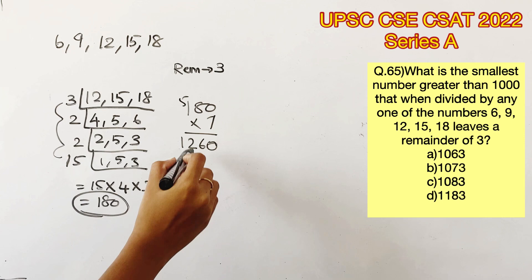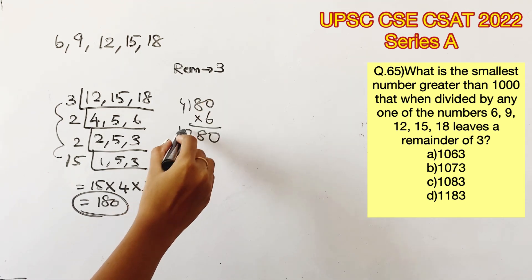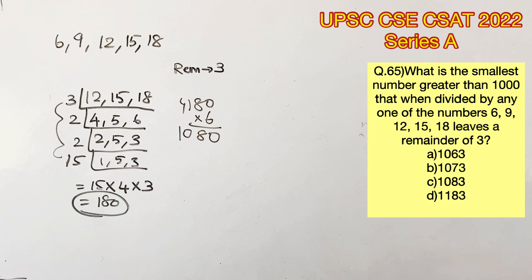Let's check with 180 × 6, which gives us 1080. It's important to note that what we have found out is the least four-digit number which is completely divisible by 6, 9, 12, 15, and 18.